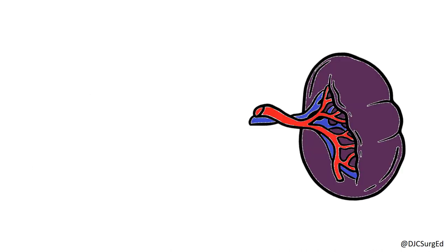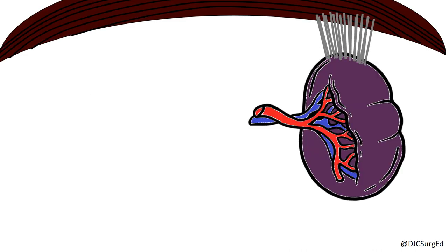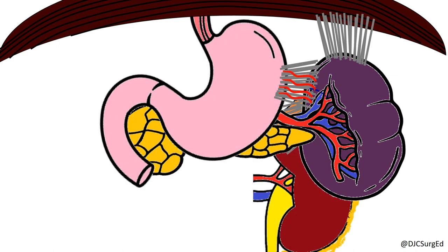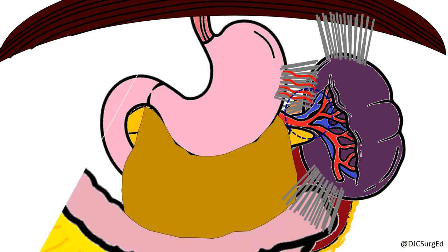The ligamentous attachments of the spleen include the avascular splenophrenic ligament, the gastrosplenic ligament containing the short gastrics, the splenorenal ligament containing the splenic artery and vein, and the avascular splenocolic ligament that can cause a capsular tear if excessive traction is applied.